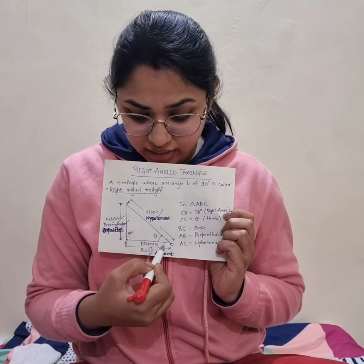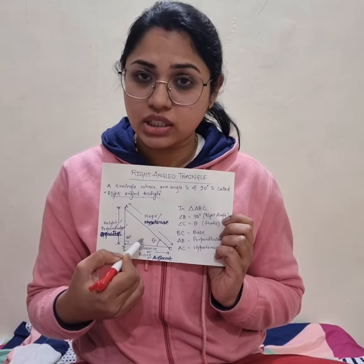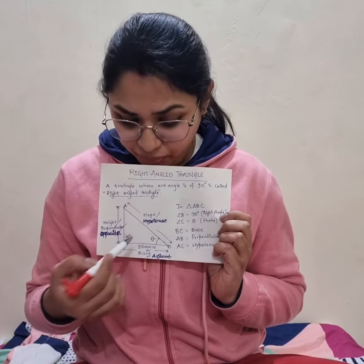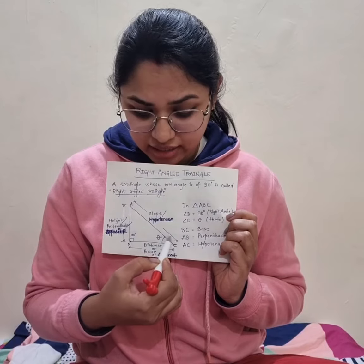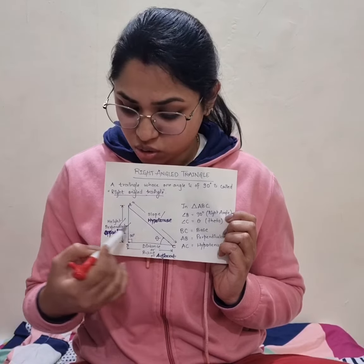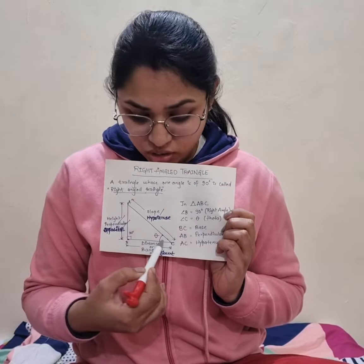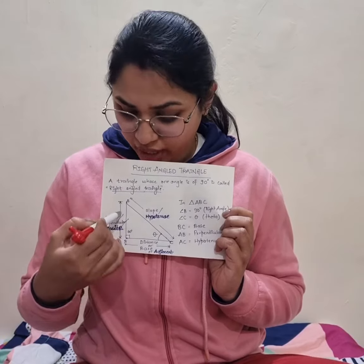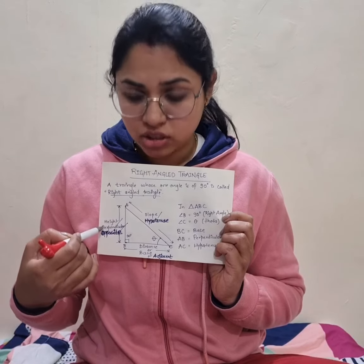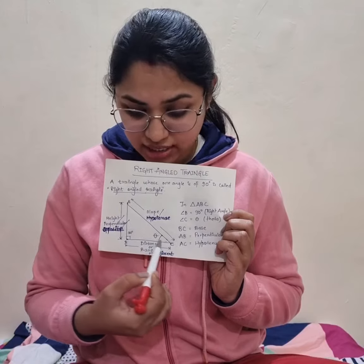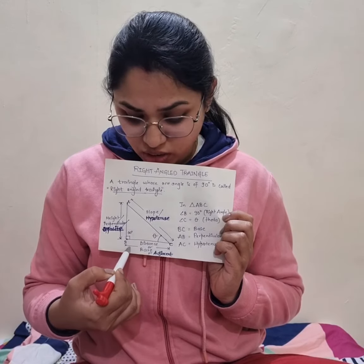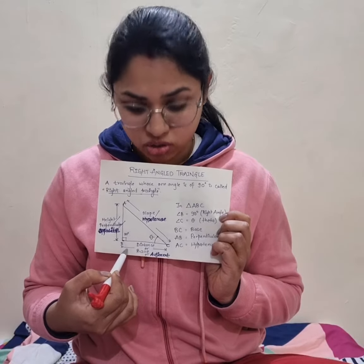Let angle C be theta. So theta is another angle, and with respect to this, we are going to study all the ratios, which will be dealt with in further lectures. You can see this is angle C, that is theta. The side opposite to theta is AB. So the side opposite to theta is known as the perpendicular, or it is known as the opposite. The side adjacent to theta is known as the base, or it is known as the adjacent.